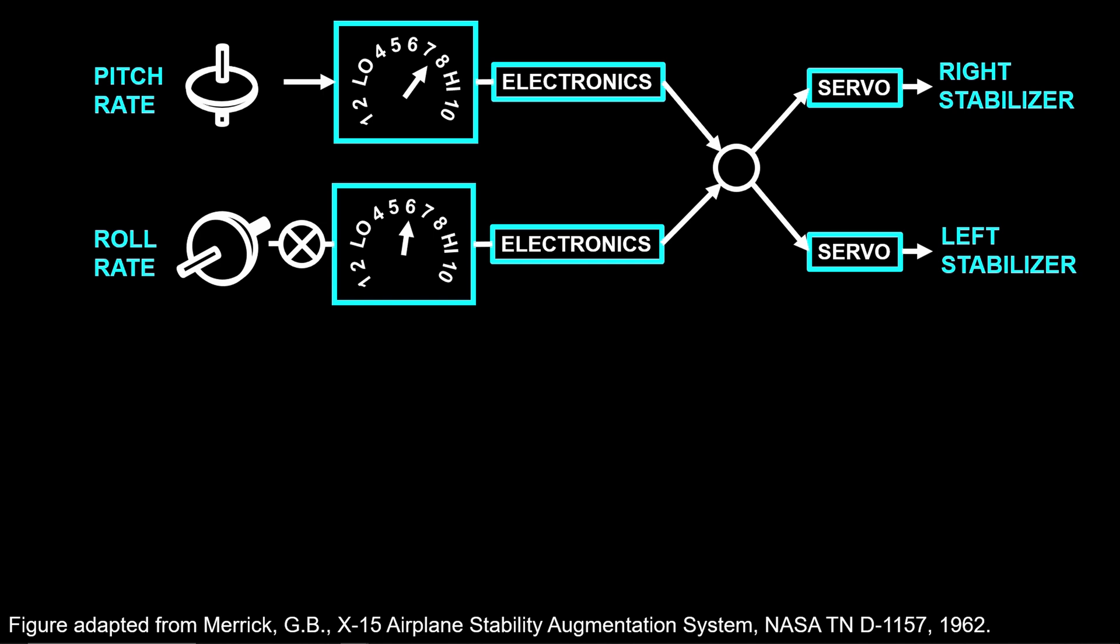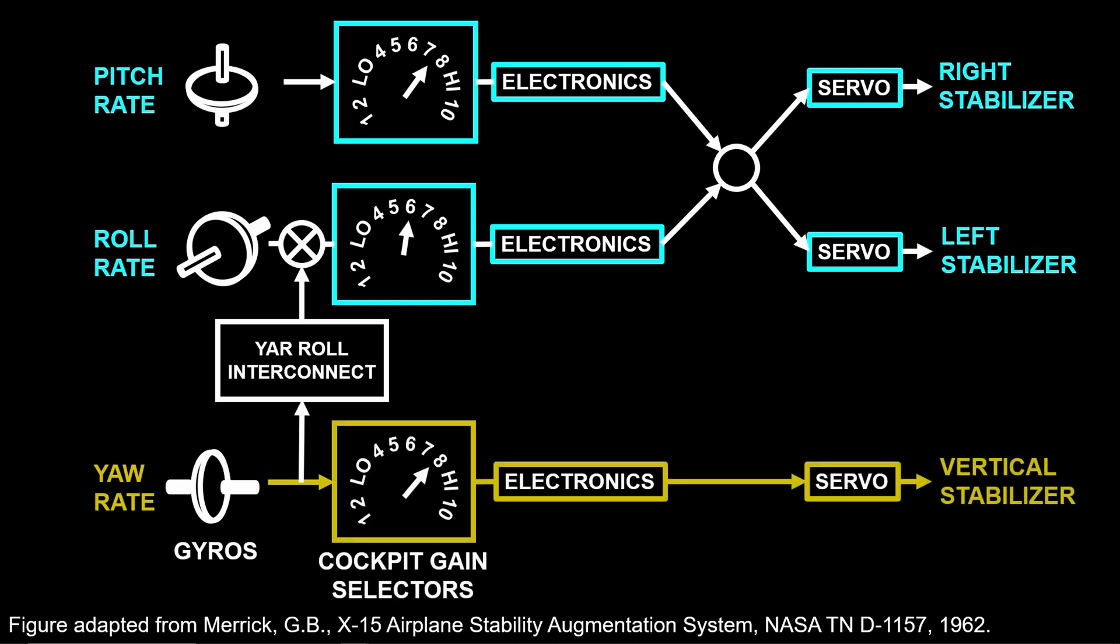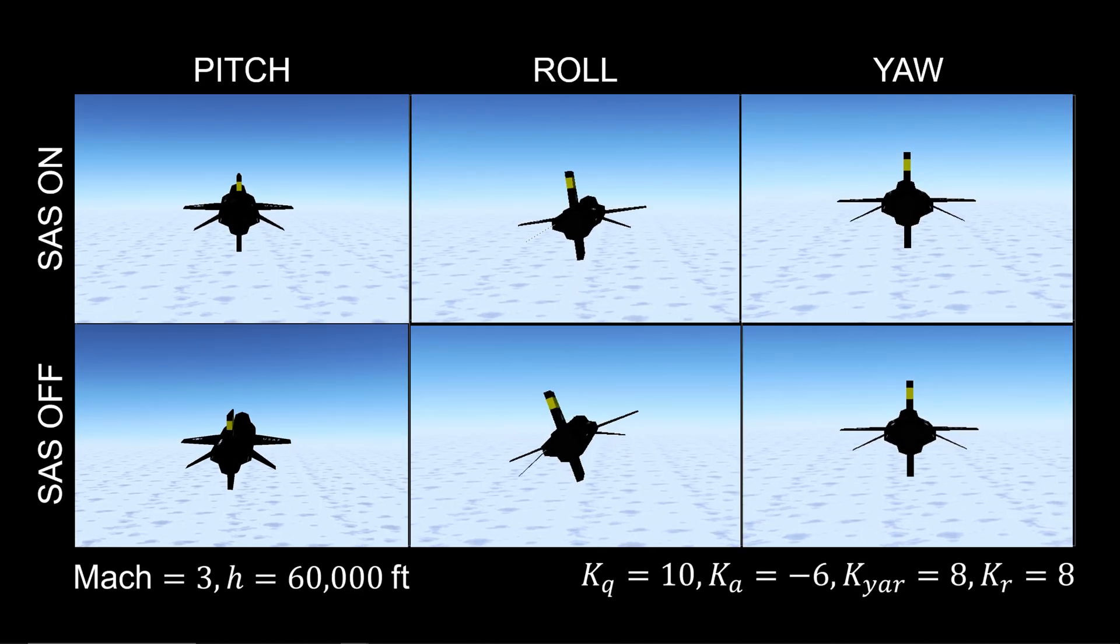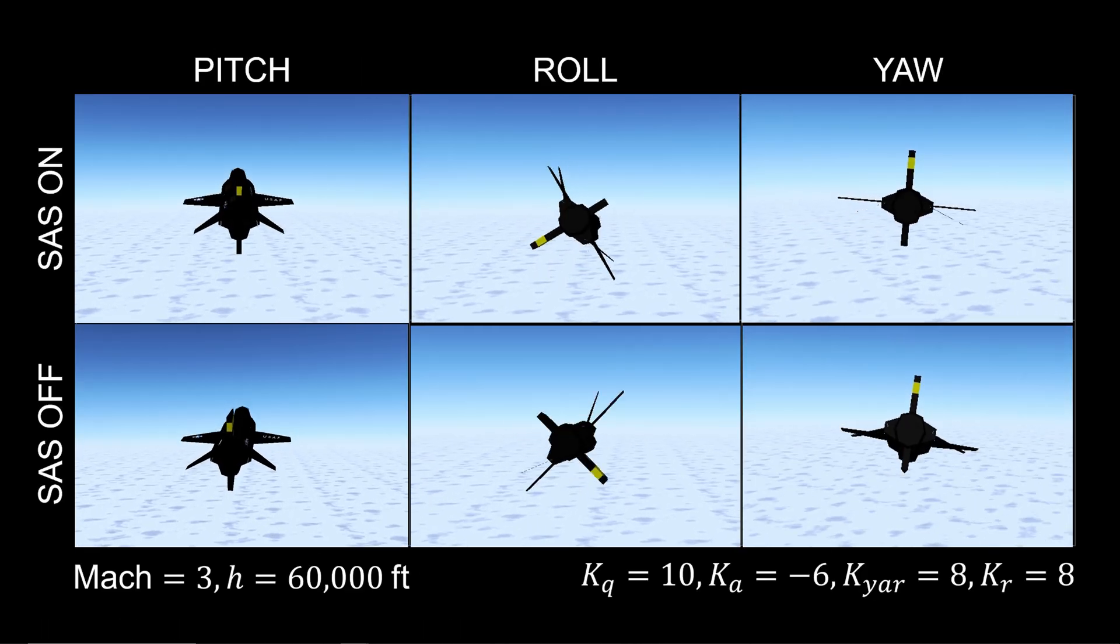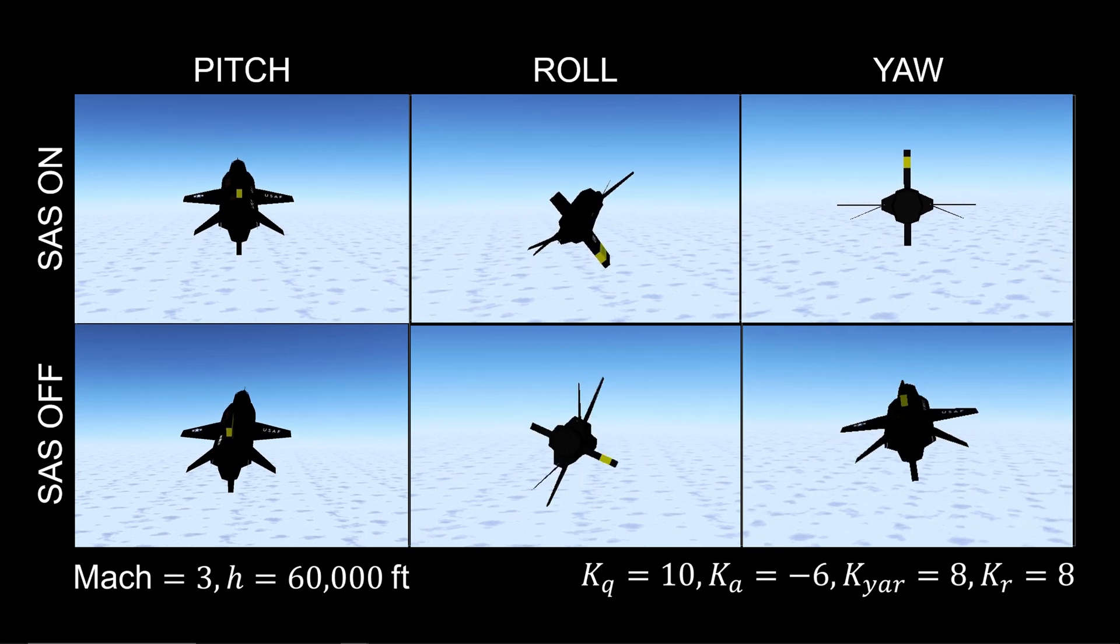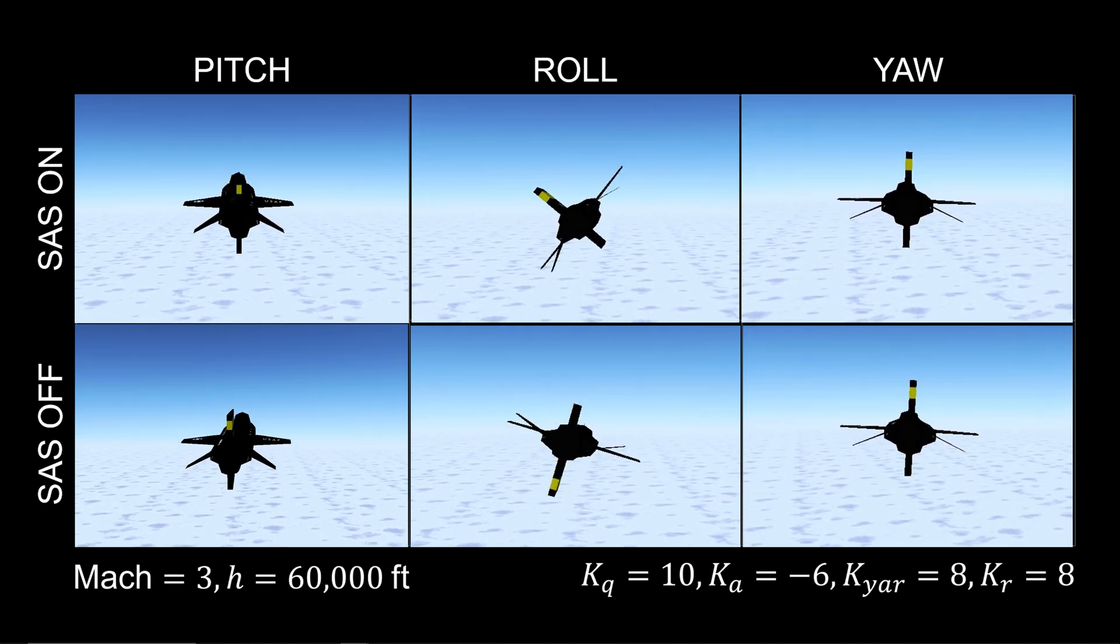To decouple yaw from roll, the yaw roll or yaw interconnect commands aileron action to correct roll due to yaw. The yaw rate measurement was also sent through a cockpit gain selector and then fed as deflection commands to the vertical stabilizer servo motor. With the full SAS on, we can observe the clear and significant artificial damping effect in the pitch, roll, and yaw axes.